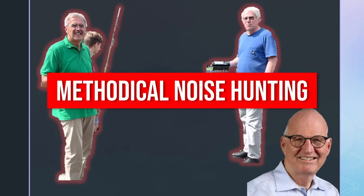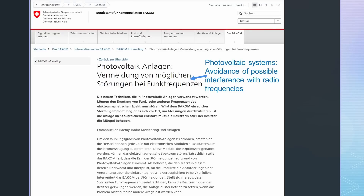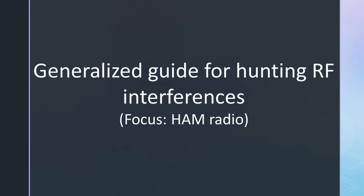Hello, wireless enthusiasts! Here is the channel with a strange Swiss distortion in the signal, with a new video around wireless and other exciting stuff. Remember to subscribe if you do not want to miss the following emissions. While using solar power for electricity generation is a brilliant idea, it can have drawbacks for radio reception, primarily when optimizers or microinverters are employed. This issue has been known for some time, and I took a warning letter from our authorities as a chance to extend the topic to a general guide for hunting RF noise shown in this video.